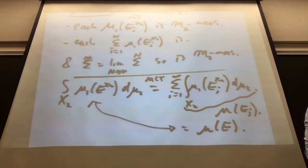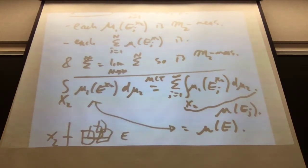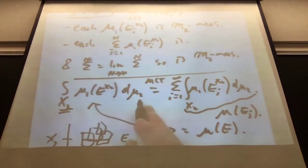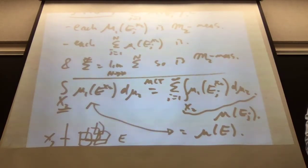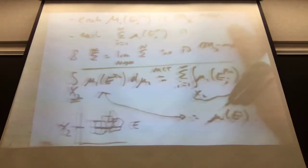We know that mu_1 of the slice is mu_2-measurable. There are three things we needed to show: E_{x_2} is in M_1, mu_1(E_{x_2}) is mu_2-measurable as a function of x_2, and the integral recovers the full measure. For the integral: by monotone convergence, we can reverse sums and integrals. Each integral over x_2 of mu_1((E_j)_{x_2}) d-mu_2 equals mu(E_j) for rectangles, and the sum of mu(E_j) for disjoint E_j equals mu(E).